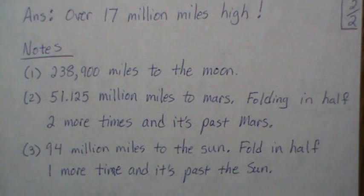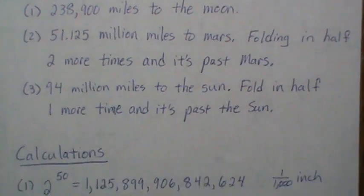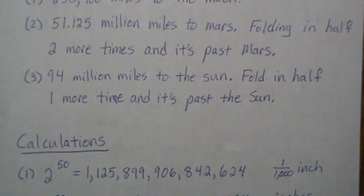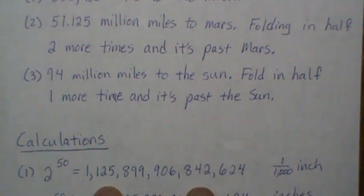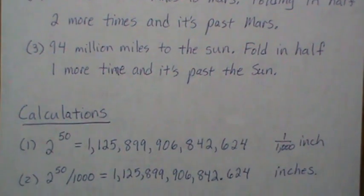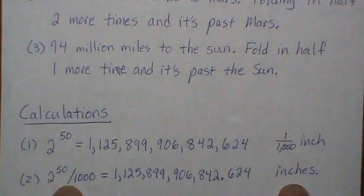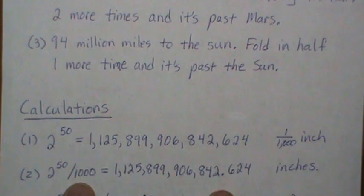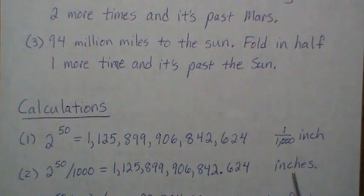Let's do the calculations. We start out with 2 to the 50th times 1/1000th of an inch—this big mega number. Now let's convert it from 1/1000th of an inch to inches. We divide by 1,000, which really just means move the decimal place three places. Now to convert this to feet, we divide by 12.